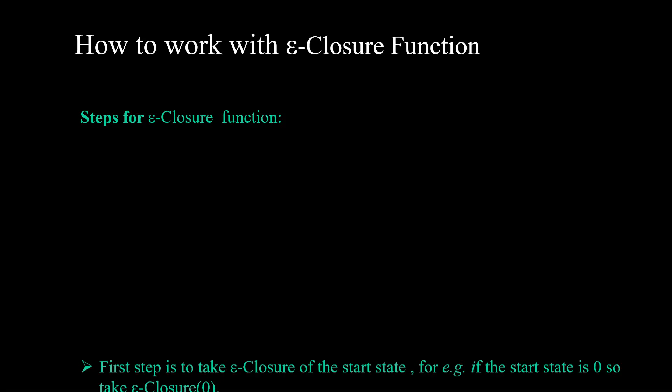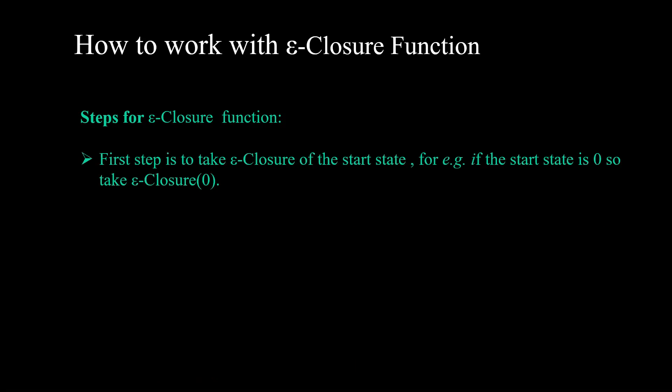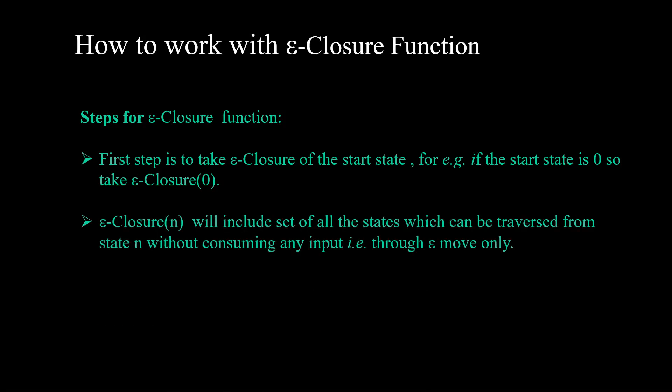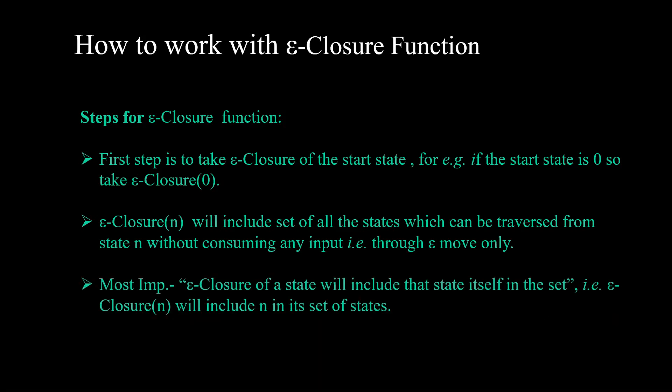Before we start with subset construction, we will discuss one important function called the eClosure function. The first step in finding the eClosure is to start with the start state. eClosure of a state n will include the set of all states which can be traversed from state n without consuming any input — that is, through epsilon moves only. Most importantly, eClosure of a state will include that state itself in the set.